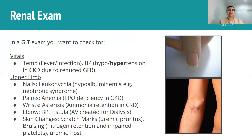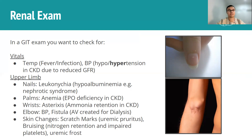Later on in hematology you'll learn about types of anemia — the type encountered with CKD and EPO deficiency is a normocytic type, which will make more sense later on. Then when you move on to the wrists, you can look for asterixis. You might remember discussing the hepatic flap in the GIT exam — the pathophysiology here is very similar. You have ammonia retention, but this time it's not because of hepatic pathology; it's because the kidneys are not effectively filtering out ammonia, retaining it and resulting in this flap.